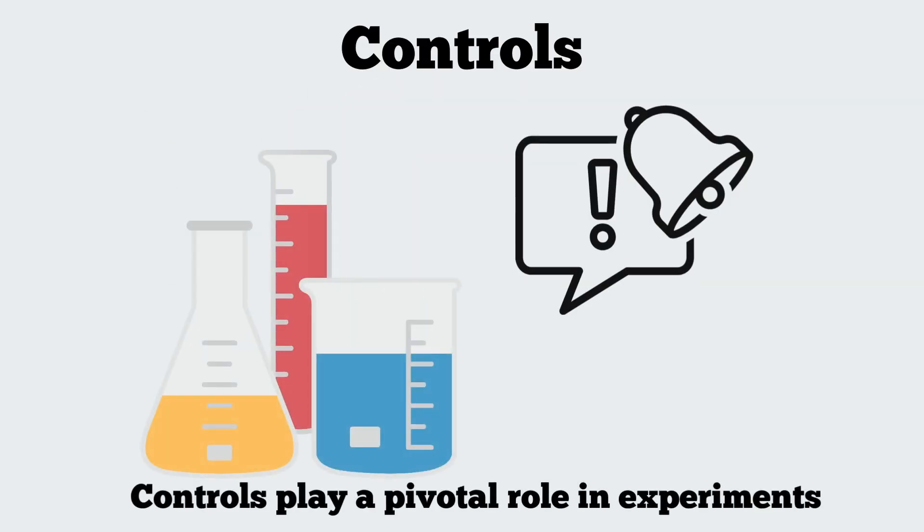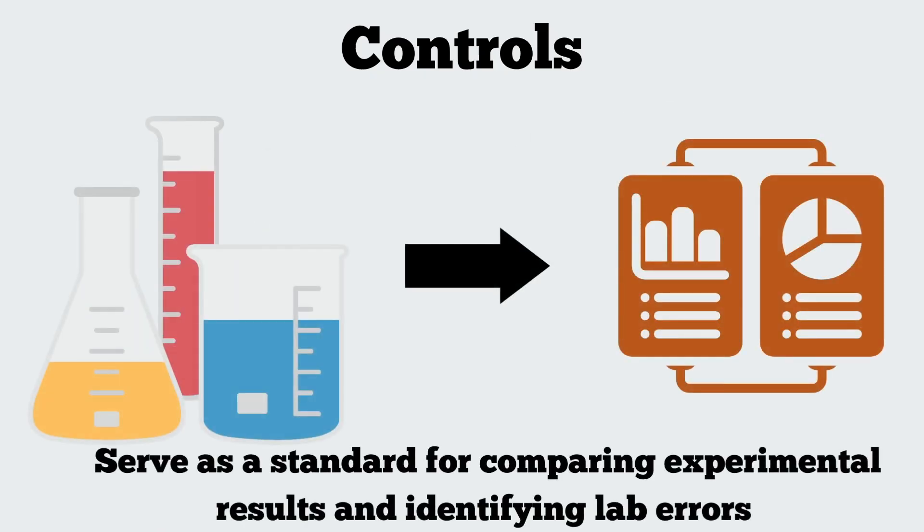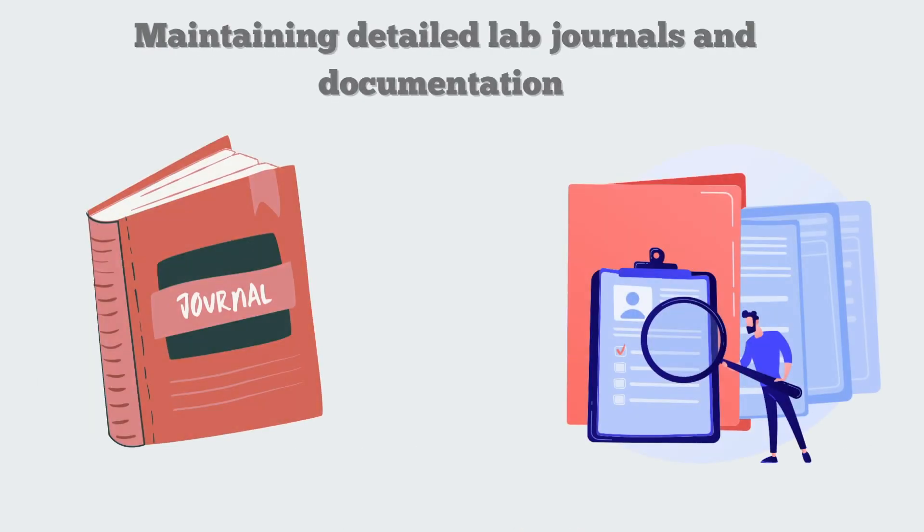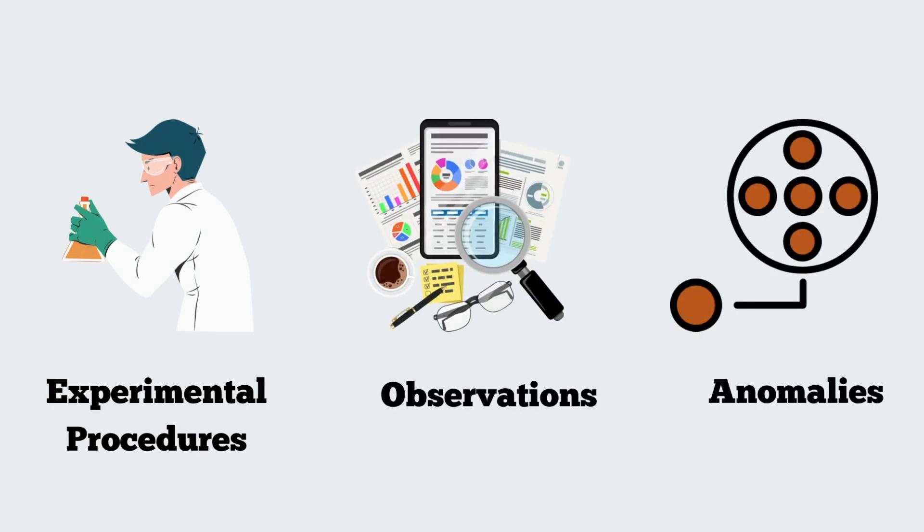Controls play a pivotal role in experiments as well. They act as a standard against which experimental results are compared, helping in identifying deviations that may indicate errors. Maintaining detailed lab journals and comprehensive documentation of experimental procedures, observations, and anomalies is invaluable for effective error tracking and correction.